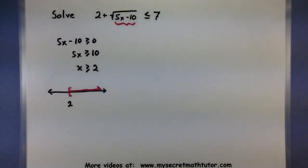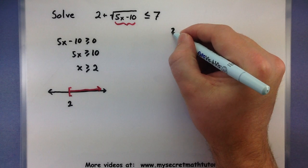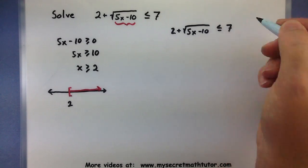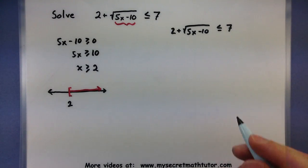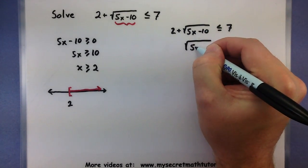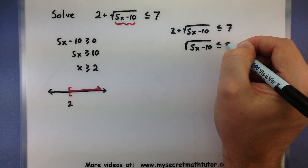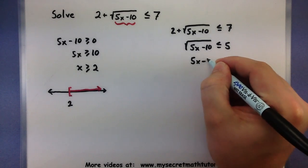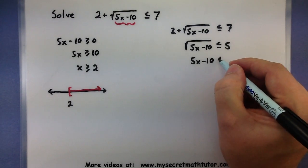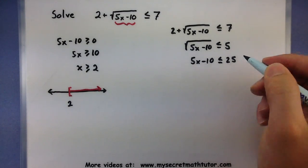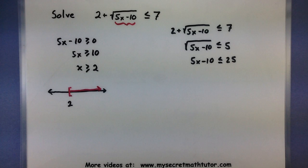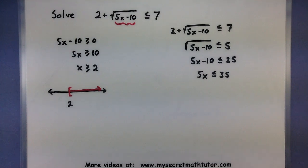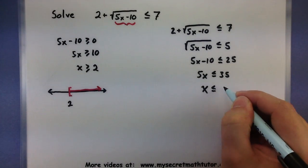Now we'll actually solve this thing directly. So 2 plus the square root of 5x minus 10 is less than or equal to 7. We'll go ahead and start by isolating that root — let's subtract 2 from both sides. Now we want to square both sides. So if I square the square root, it's gone. And if I square 5, I get 25. Let's add 10 to both sides, and one last step, let's divide by 5. So x is less than or equal to 7.